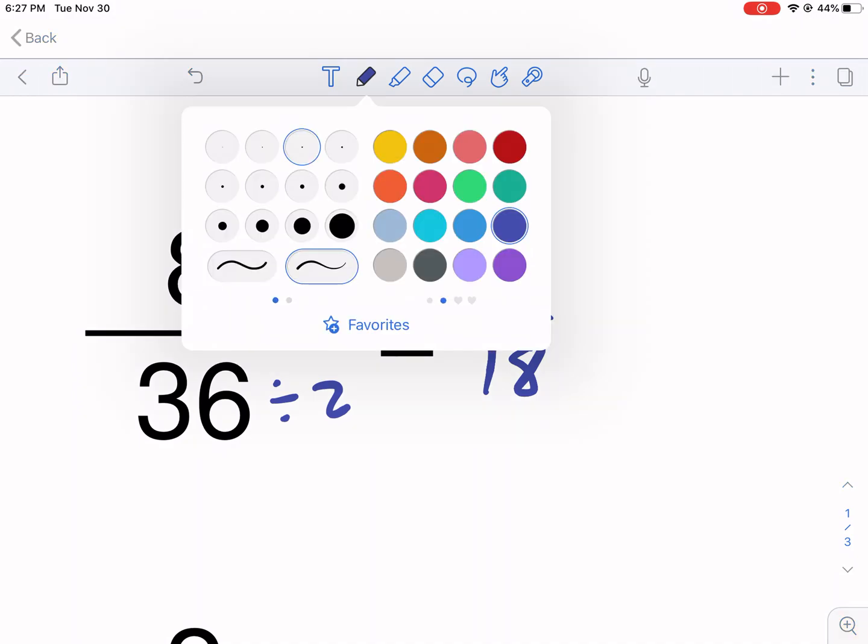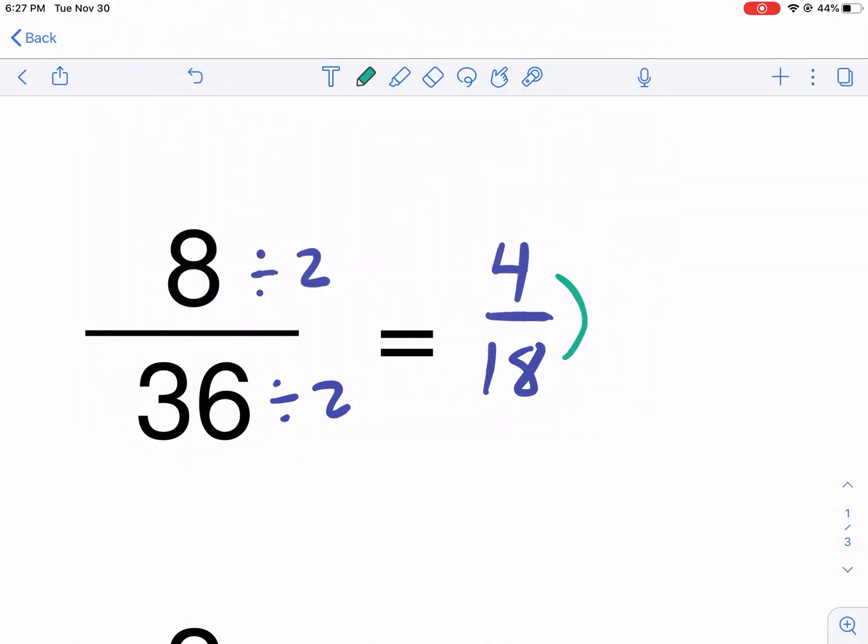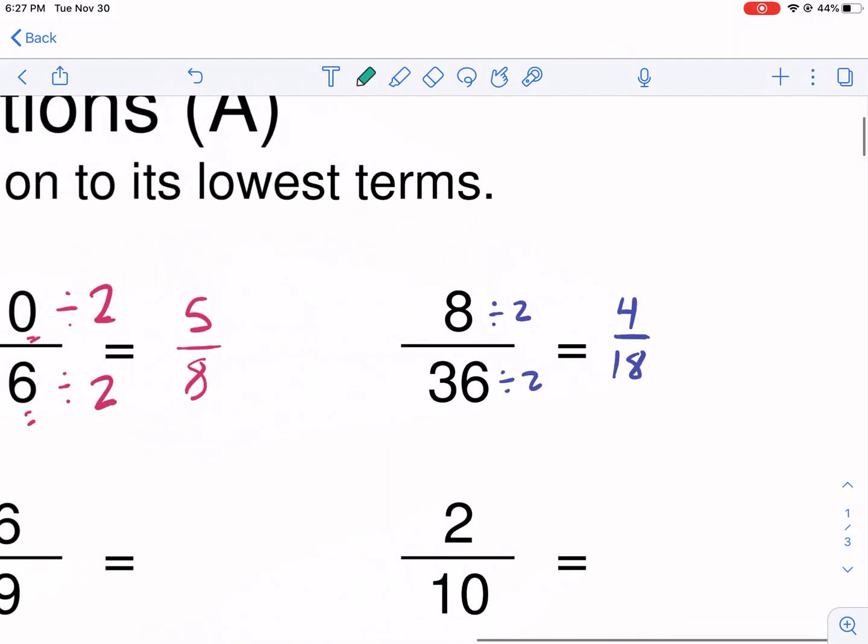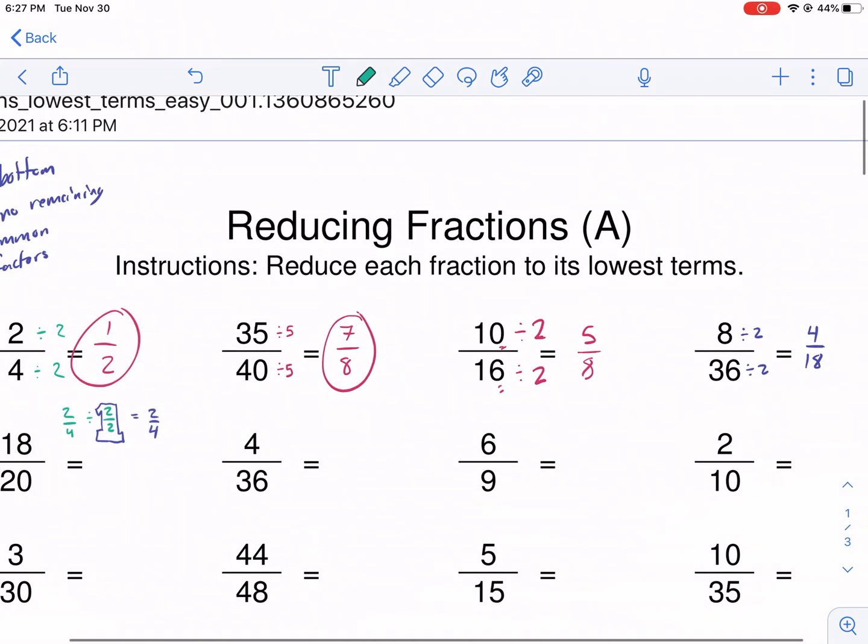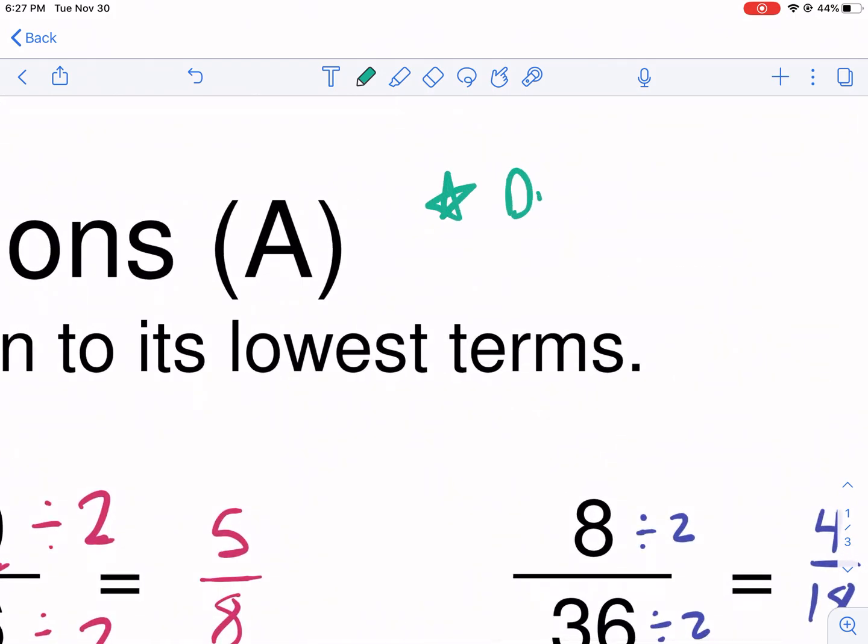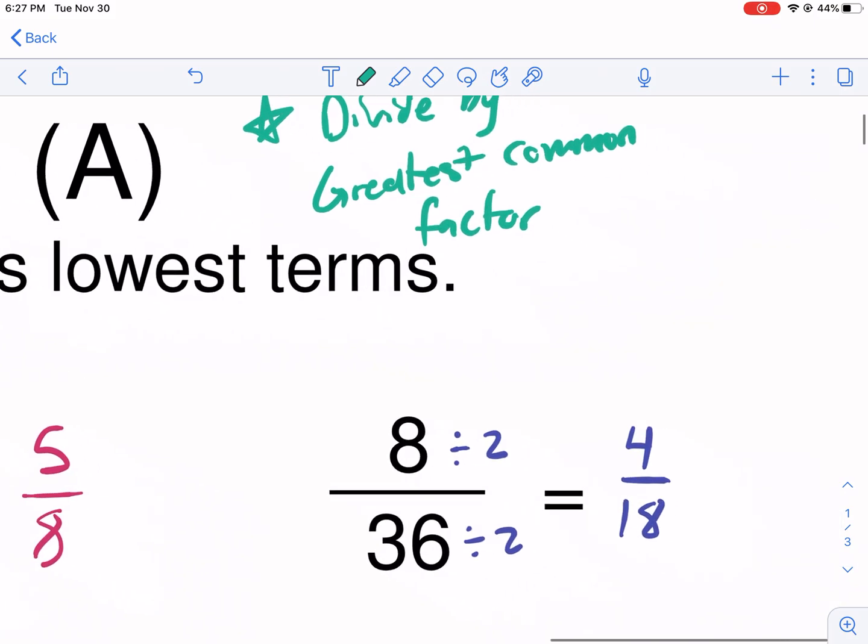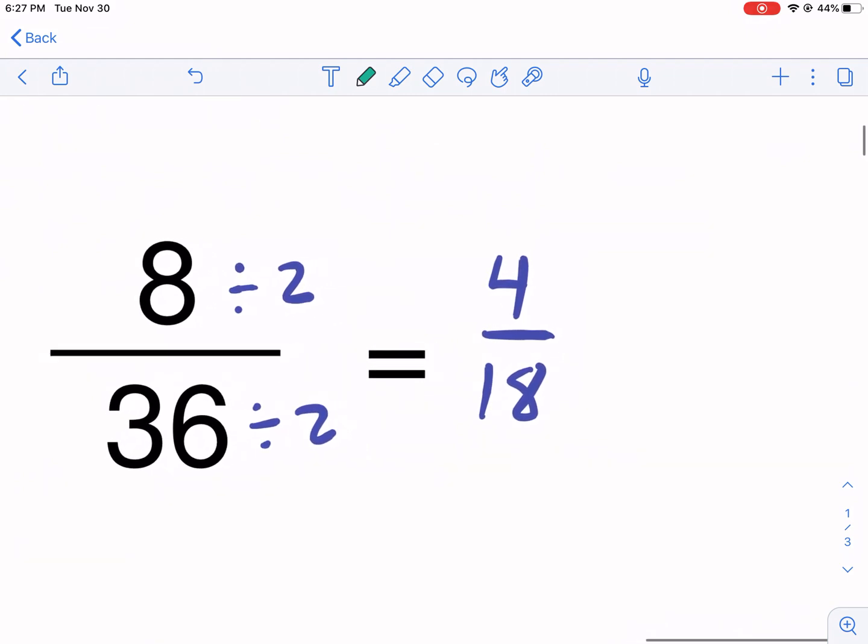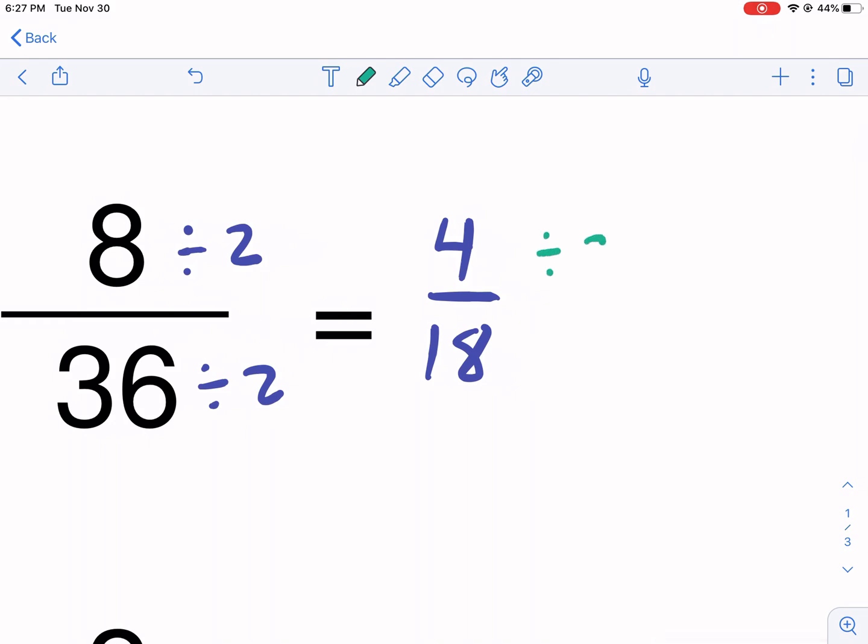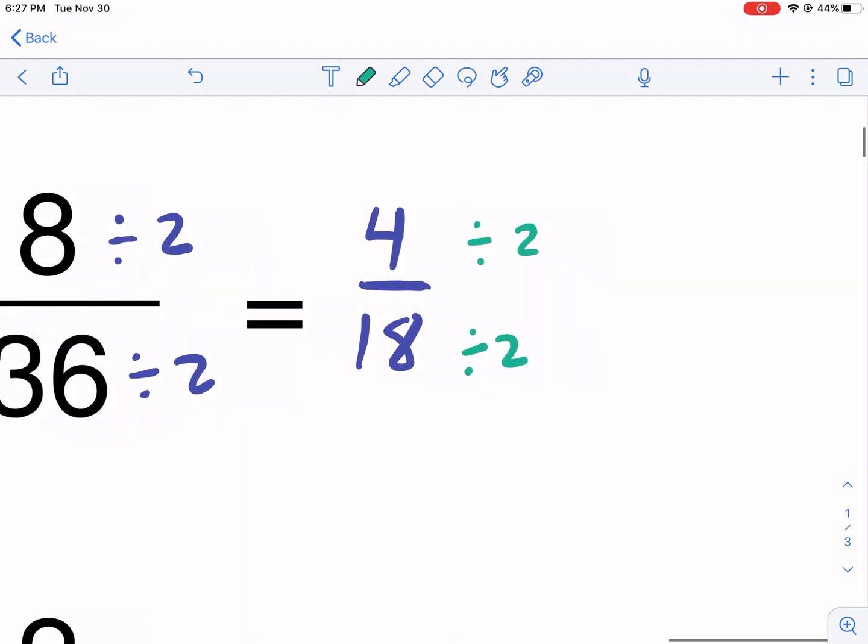The problem is, it's not in lowest terms, because these still have common factors. So what you really should do is you need to, this is the process, divide by the greatest common factor. Common means they share it. Greatest means it's the biggest. And factor means what are the pieces that multiply together to give you the number. So 8 divided by 2 is 4. But that's not the biggest factor between them. I can divide both the top and bottom by 2 again, 18 and 4, both share a factor of 2, because they're both even, and I get 2 over 9. Now we're done.